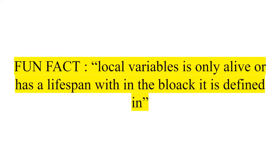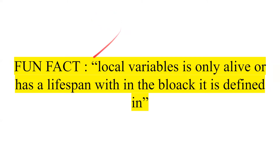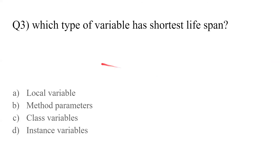Fun fact: a local variable is only alive, or has a lifespan, within the block it is defined in. For example, if you have a variable inside a method, it only lasts as long as the method. If you have a variable inside a loop, it will only be alive or accessible inside that loop — wherever the bracket ends, the local variable ends.